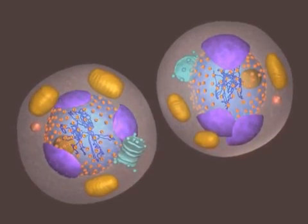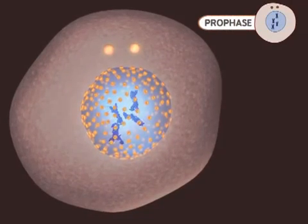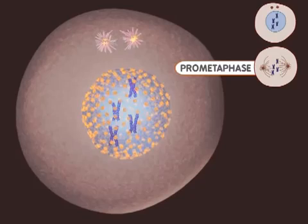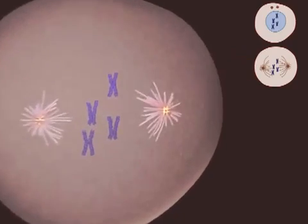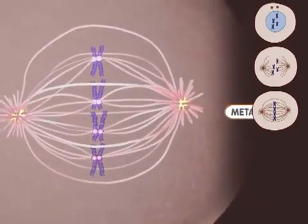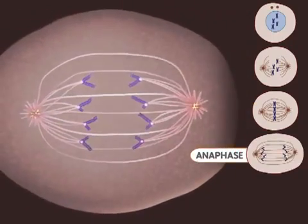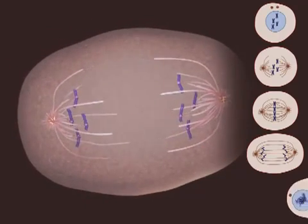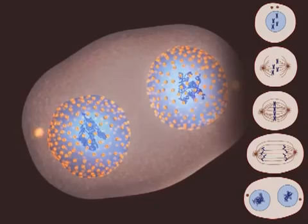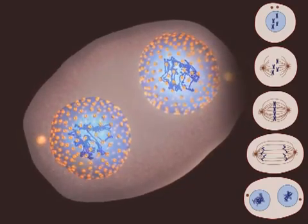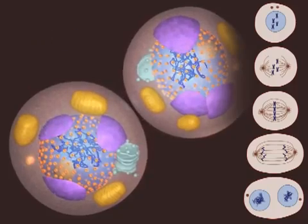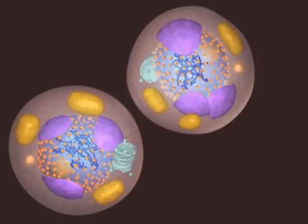Let's watch the process one more time. Mitosis begins with prophase — notice the DNA condensing into chromosomes during this stage. Microtubules appear during prometaphase, and the nuclear membrane breaks down. Metaphase occurs when the chromosomes are aligned at the center of the cell. During anaphase, the chromosomes are moving apart. The telophase stage is marked by the appearance of new nuclear membranes. This is the end of mitosis. Finally, the splitting of the cell occurs during cytokinesis. The two new cells are now ready to grow and perform their specialized functions.